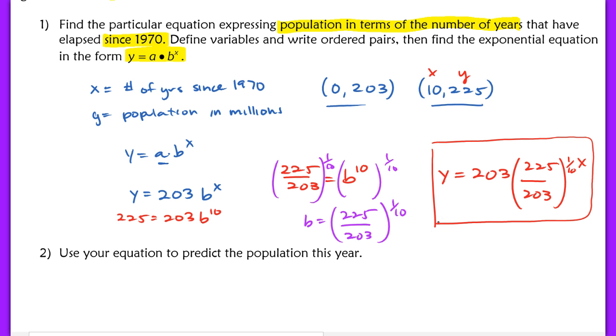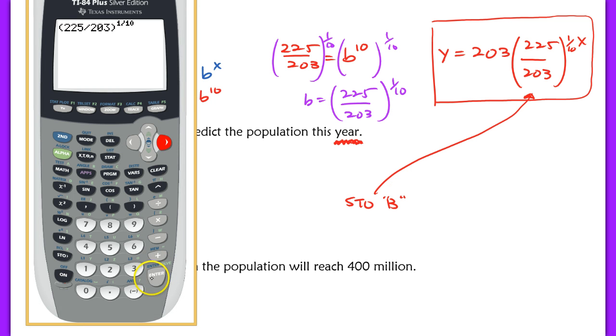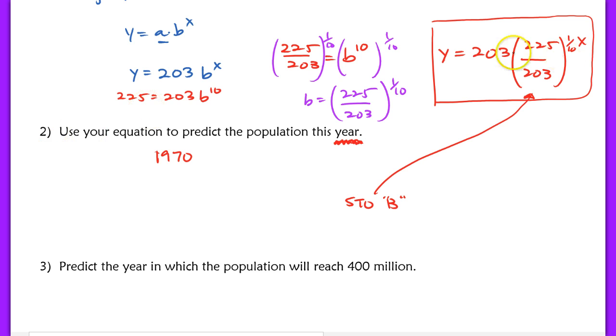Now, the second question says to use this equation to predict the population this year. When you're taking into account this year, you have to think about in terms of the years past since 1970. But before you even begin that problem, I actually want you to store your b value here because we're going to use this same b value a lot. Let's work on storing our b value. I entered that calculation here and now I'm going to store this value. I just hit store and then alpha b. Now that it's stored, when I go to this problem, it's going to be quite easy. All I have to do is type into my calculator 203 times b raised to the x value.